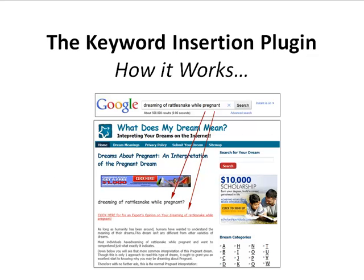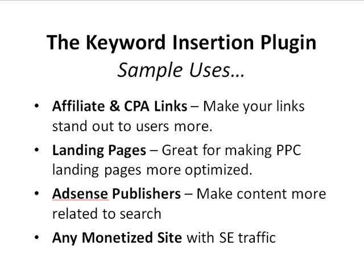Some sample uses of the plugin: if you do affiliate marketing or CPA marketing, you can make your affiliate text links stand out much more, dynamically inserting whatever visitors typed right into your affiliate links to drive them through to the offer and increase conversions. You could put it on landing pages for pay-per-click marketing — imagine a headline that matches exactly what the visitor typed. You can also use it on sites with Google AdSense, placing a headline above an AdSense block showing the exact keyword. Basically, any site you're trying to monetize with search engine traffic benefits from this.